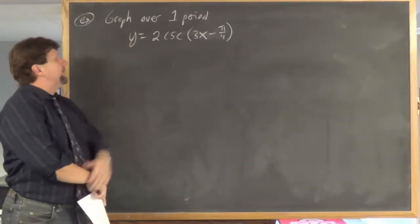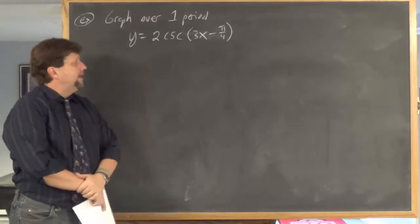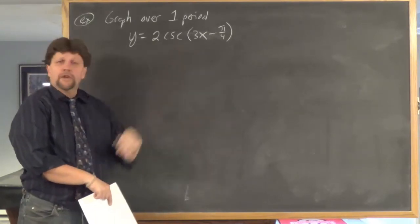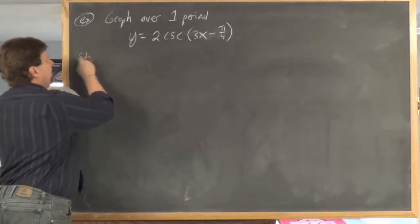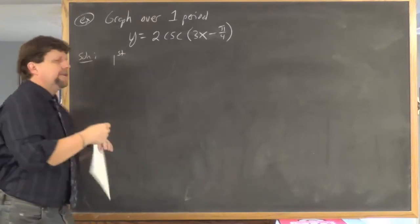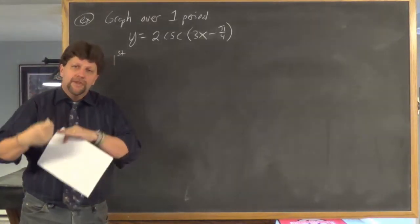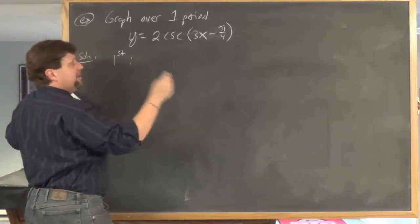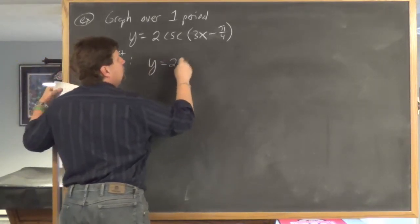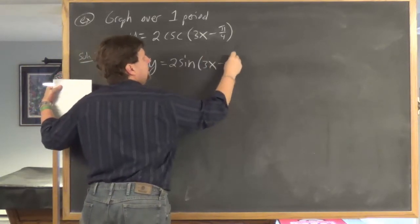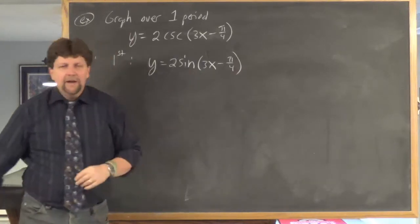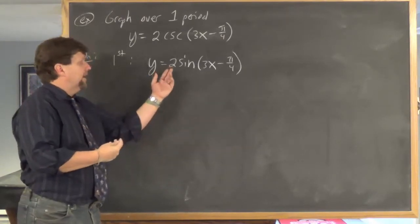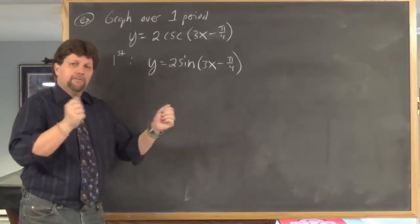Say we're graphing over one period y equals 2 cosecant of (3x minus pi over 4). When asked to graph this cosecant function, the first thing I do is graph its related sine function as my guide. So I'm going to graph over one period y equals 2 sine (3x minus pi over 4), because we know how to graph that. This is a friendly one — it has a different amplitude, different period, and a phase shift.